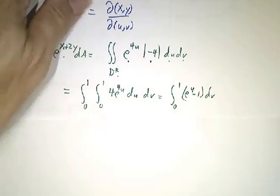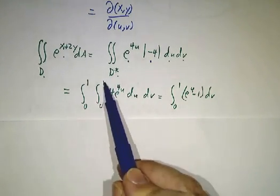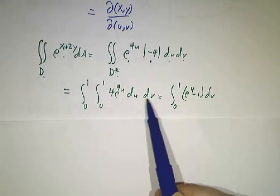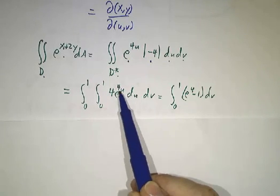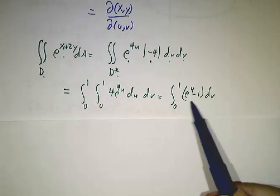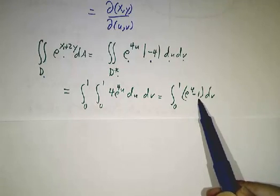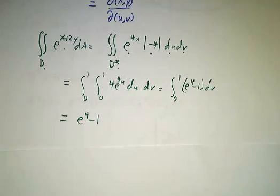And that becomes the integral, as v goes from 0 to 1, the integral of u goes from 0 to 1, 4e to the 4u du dv. The integral of 4e to the 4u du is e to the 4u. Evaluated at 0 to 1 gives you e to the 4th minus 1. Integrate that from 0 to 1, and you get e to the 4th minus 1.